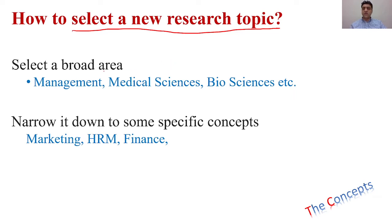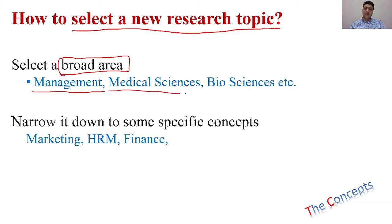First of all, you need to be very clear about your broader area of the degree that you are doing. For example, some people are doing their degrees in management sciences such as MBA or BBA, and some people are doing degrees in medical sciences, biosciences, chemistry, physics, or other sciences. You need to be clear about your broader area and then narrow it down to a specific area.